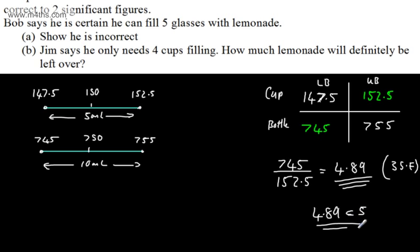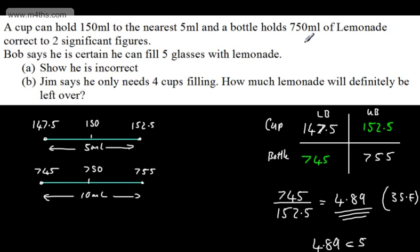Therefore we can say that 4.89 is going to be less than 5. So all we've done is gone ahead and done that. On the face of it, it looks like he could do it. 750 divided by 150 does give him 5.